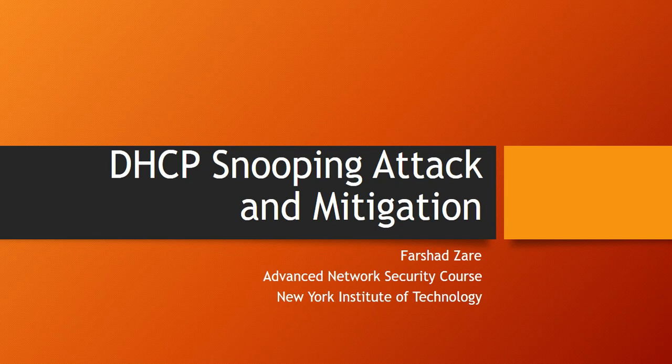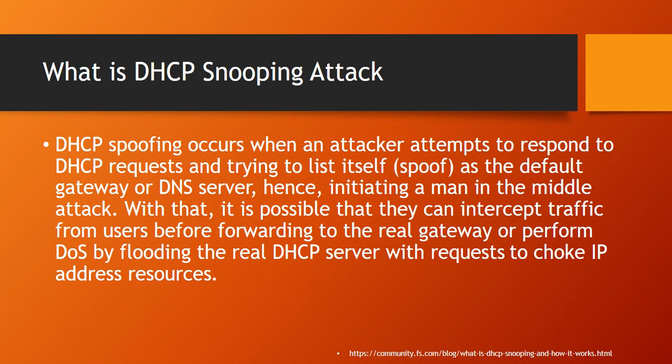Hello everyone. In this scenario I wanted to explain what a DHCP spoofing attack is and how to mitigate this type of attack. A DHCP spoofing attack is a kind of attack where the attacker provides a fake DHCP server to the network and supplies clients with fake IP addresses, changing the DNS server and the default gateway. This is dangerous because it enables the attacker to perform a man-in-the-middle attack, sniffing packets on the network or redirecting traffic from the client network to other networks.